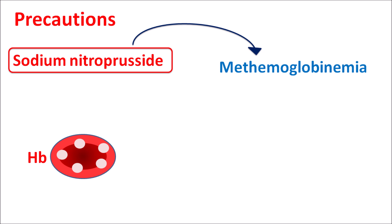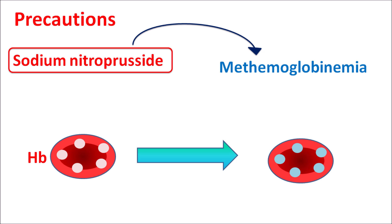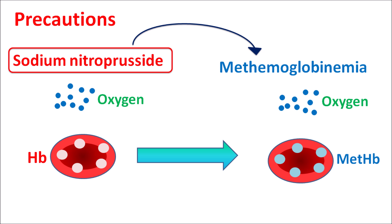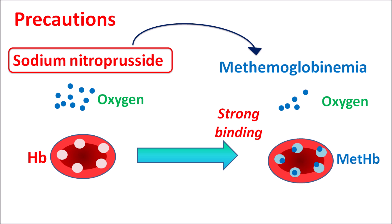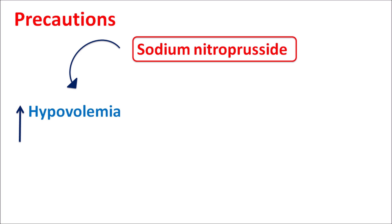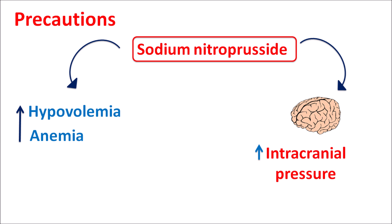This drug can also produce methemoglobinemia. Within erythrocytes, hemoglobin can be converted into methemoglobin. Oxygen binds easily to normal hemoglobin and is easily released for tissue delivery. However, oxygen binds very strongly to methemoglobin and cannot be easily removed, so it cannot be transported to tissues, reducing the oxygen-carrying capacity of erythrocytes. Additionally, this drug can increase hypovolemia and anemia, and it can also raise intracranial pressure, so it should be used carefully in patients with already elevated intracranial pressure.